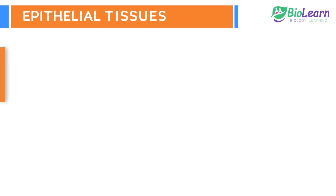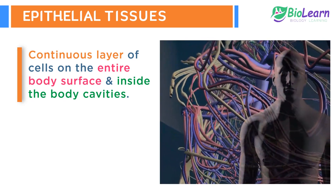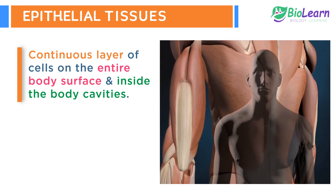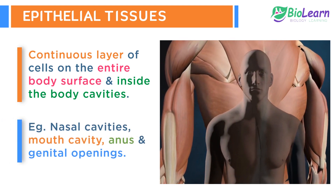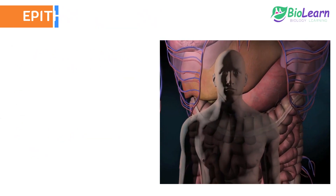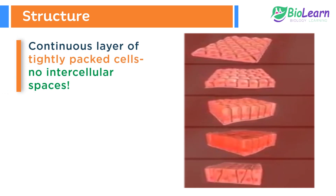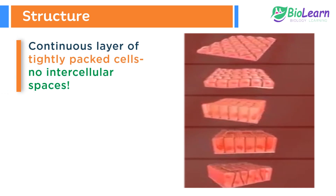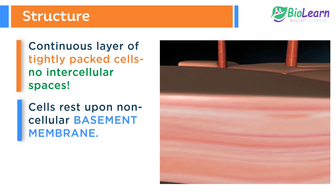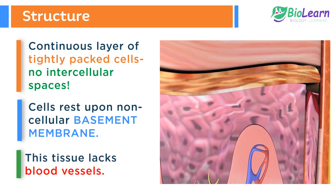In animals, epithelial tissue or epithelium constitutes a continuous layer of cells on the entire body surface, inside the body cavities, and all the passages leading to the exterior, such as nasal cavity, mouth cavity, anus, and genital openings. It is a continuous layer of tightly packed cells with negligible or no intercellular space between the cells. The cells rest upon a non-cellular basement membrane made up of proteins. This tissue lacks blood vessels.